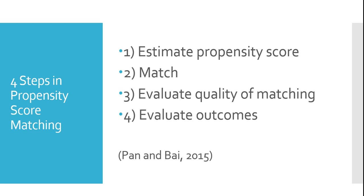Once we've made the match, we evaluate the quality of matching. The purpose of the matching is to get a treatment and comparison group that looks similar on observable characteristics. If we fail to get two groups that look similar and don't have balance of covariates, then we might think our match has not done a very good job. Assuming that we have a good match, we can then evaluate our outcomes, looking at the effect of the program or policy.